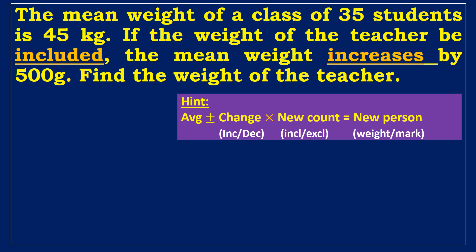Let's look at an example of the average concept. The mean weight of a class of 35 students is 45 kilogram. If the weight of the teacher is included, the mean weight increases by 500 grams. Find the weight of the teacher. There is a really interesting math trick behind it. For including or excluding concepts, we use direct formula, that is, the average value plus or minus the change in value into new count is equal to the new person's value. The mean weight is 45 kilograms, the change in weight is 0.5 kilograms, and the new count is 36. We can write, 45 plus 0.5 into 36. So, the weight of the teacher is 63 kilogram.